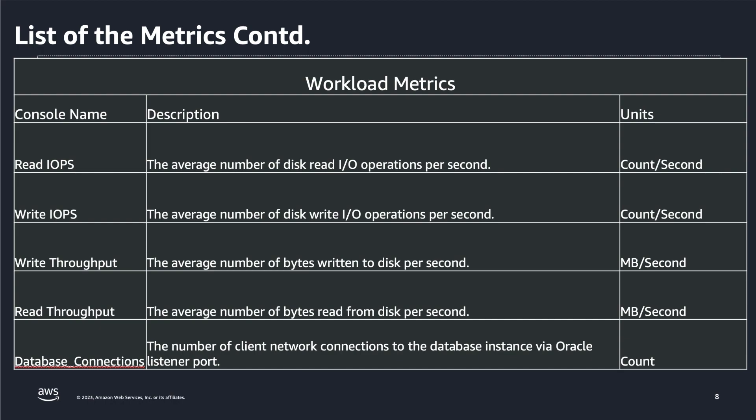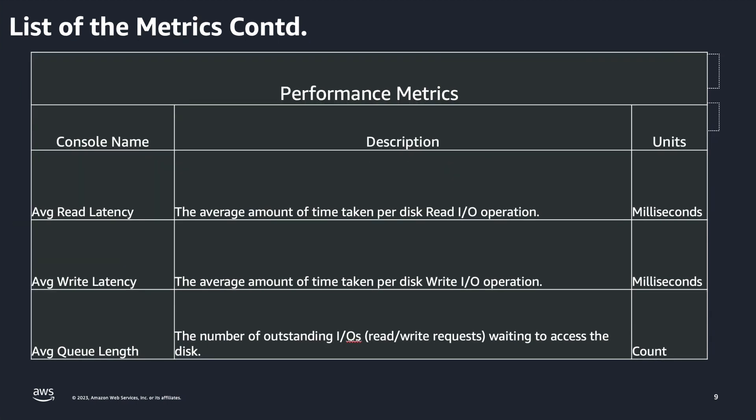From a workload metrics perspective, we have included read and write IOPS as well as read and write throughput so you can monitor how your workload is performing. You can also see database connections — for this metric, we collect data from the Oracle listener port 1521, which is the default port. If you are using a different port, you have the option of changing the port number in the scripts. From a performance metrics perspective, we have included average read and write latency metrics as well as the average queue length metric.